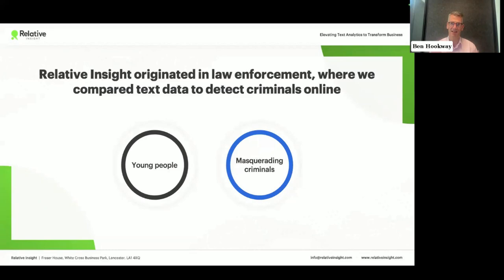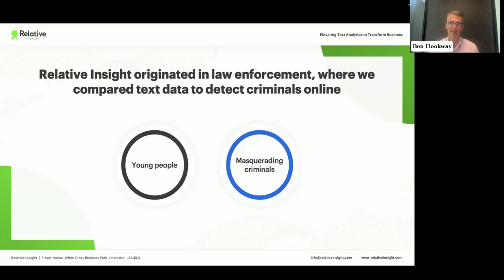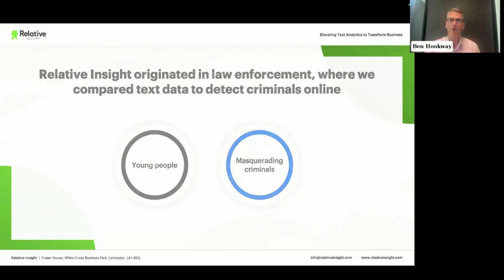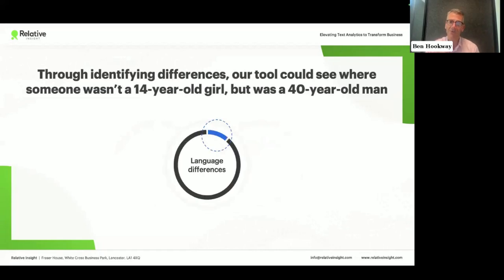Everyone will know what their metric is sometimes, but often they don't know why it is what it is, and the answer to that is normally in the text. We started in law enforcement — that's the foundation and heritage of what we do. Our original purpose was to catch people masquerading online, usually in a child protection context. We can tell if you're a 13-year-old girl or a 40-year-old man doing a really good impression of one. The bad guys are like 97% perfect, so a standard text analytics algorithm would probably tell you it is a 13-year-old girl. We solved that by developing a comparative technique: taking databases of verified 13-year-old girl language from the security services, then taking suspect language and comparing them — surfacing the differences.